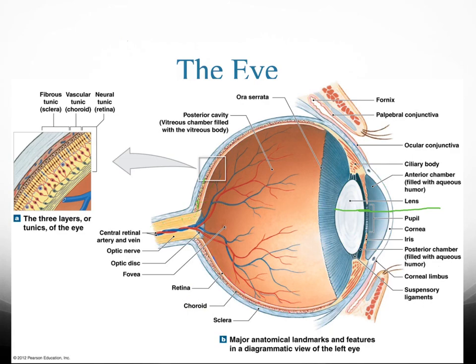Within your optic nerve, we're going to have a structure called the optic disc, where all your optic nerve fibers merge together and it forms like a little depression. In the middle, you're going to have a central retinal artery and vein that supply oxygen and remove waste from your eye through the central structure of your optic nerve.